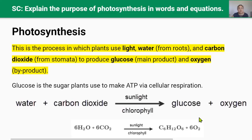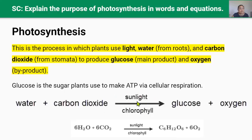So what is photosynthesis? Photosynthesis is the process in which plants use light energy, water, and carbon dioxide to produce glucose and oxygen. Glucose is the sugar molecule that plants use to make energy in the form of ATP that they need to survive.